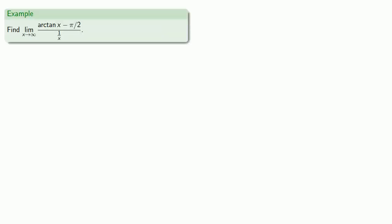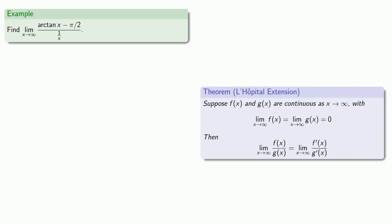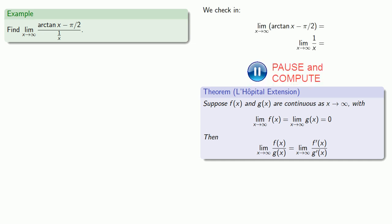Let's use this extension of L'Hôpital's rule to find the limit as x goes to infinity of (arctan x − π/2) / (1/x). The first thing we do is check the admission requirements — we verify that both the numerator and denominator go to 0. We'll find those limits, and they do, so we're ready to apply L'Hôpital's rule.